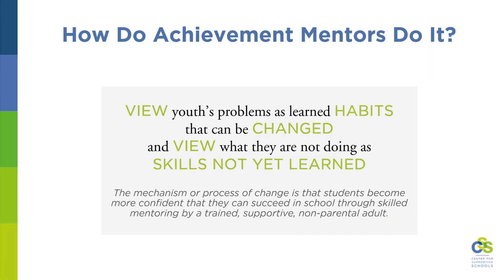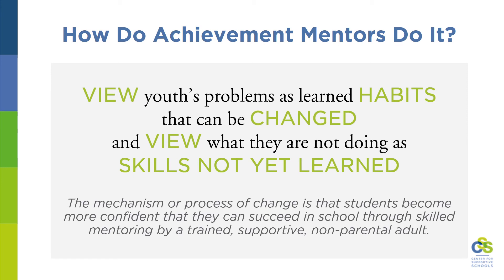How do achievement mentors do it? Mentors view youth's problems as learned habits that can be changed, and view what they are not doing as skills not yet learned. The mechanism of change is that students become more confident that they can succeed in school through skilled mentoring by a trained, supportive, non-parental adult.